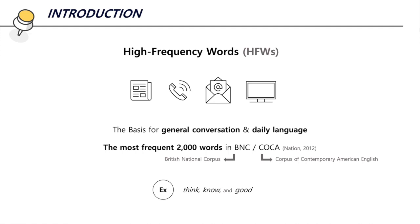High frequency words are the most commonly used vocabularies in general conversation and everyday language such as newspapers, telephone conversations, emails, and TV programs. These lexical items constitute the most frequent 2,000 words of the British National Corpus and the Corpus of Contemporary American English. Words such as 'think,' 'know,' and 'good' are some examples of high frequency words.